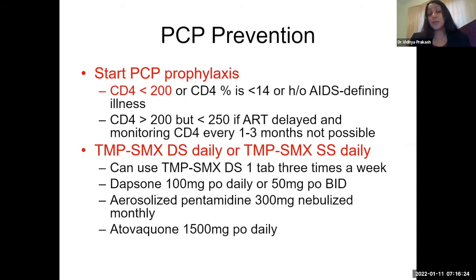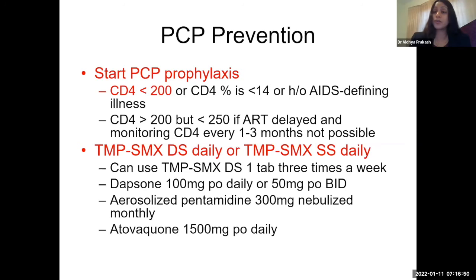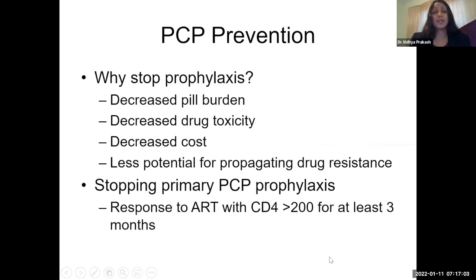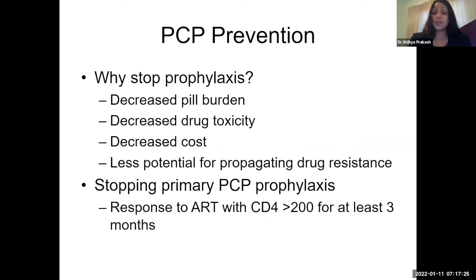When do you start PCP prophylaxis? If CD4 is less than 200, or less than 14% percentage, or any history of an AIDS-defining illness, start PCP prophylaxis. If they're above 200 but less than 250 and not on ART — and you can't monitor CD4 every couple of months — go ahead and start prophylaxis. Preferred choice is Bactrim, either daily or three days a week. Alternatives if they can't tolerate Bactrim include dapsone, aerosolized pentamidine, or atovaquone. You can safely stop PCP prophylaxis when they are on ART and their CD4 count is greater than 200 for at least three months — to reduce pill burden, drug toxicity, cost, and drug resistance.